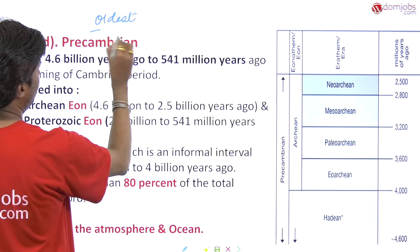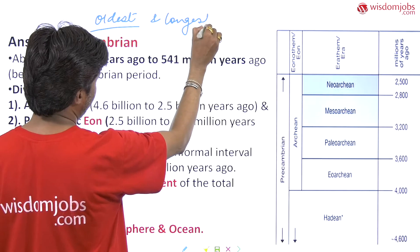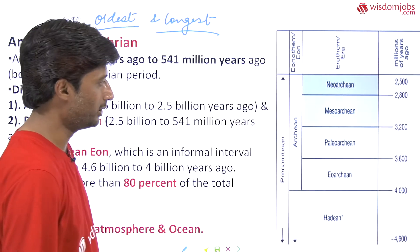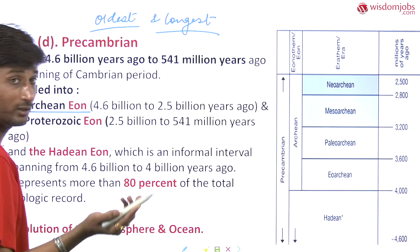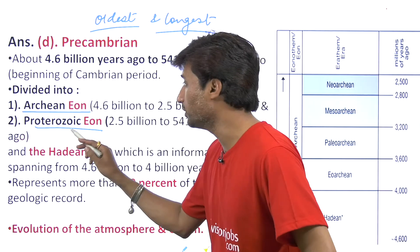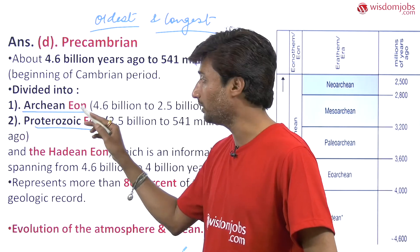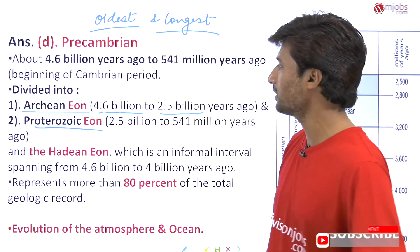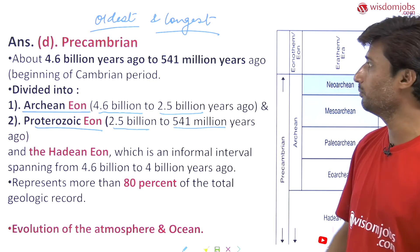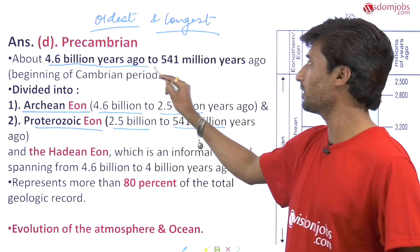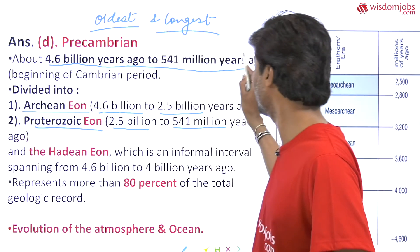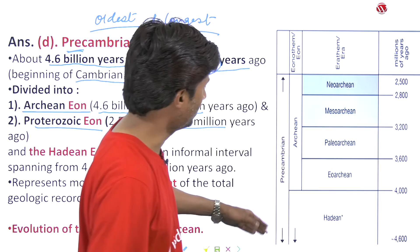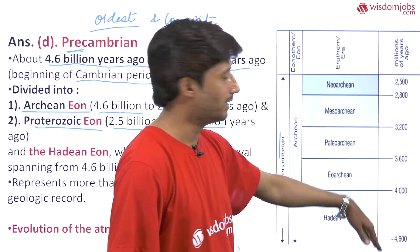The Pre-Cambrian era has been divided into the Archaean Eon and the Proterozoic Eon. I have made separate videos on both — please refer to those as well. The Archaean Eon begins at 4.6 billion to 2.5 billion years ago. The Proterozoic Eon spans 2.5 billion to 541 million years ago. After 541 million years ago, the Cambrian period begins. We are talking about the Pre-Cambrian part.